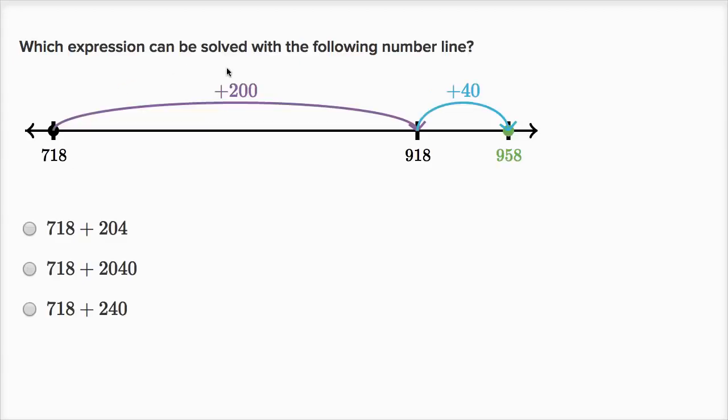Which expression can be solved with the following number line? We're starting at 718, and then we're adding 200, and then we're adding 40 to get to 958. So this is really 718 plus 240, which is this choice right over there.